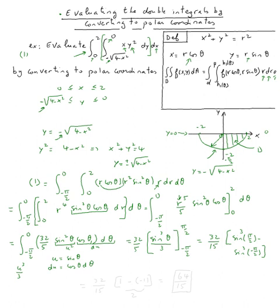That would equal 32 over 15. Sine of π over 2 is 1, so that would be 1. And sine of negative π over 2 would be negative 1, so 1 minus negative 1. So this is going to equal 2, and 2 times 32 is 64 over 15. And that's it for this example.